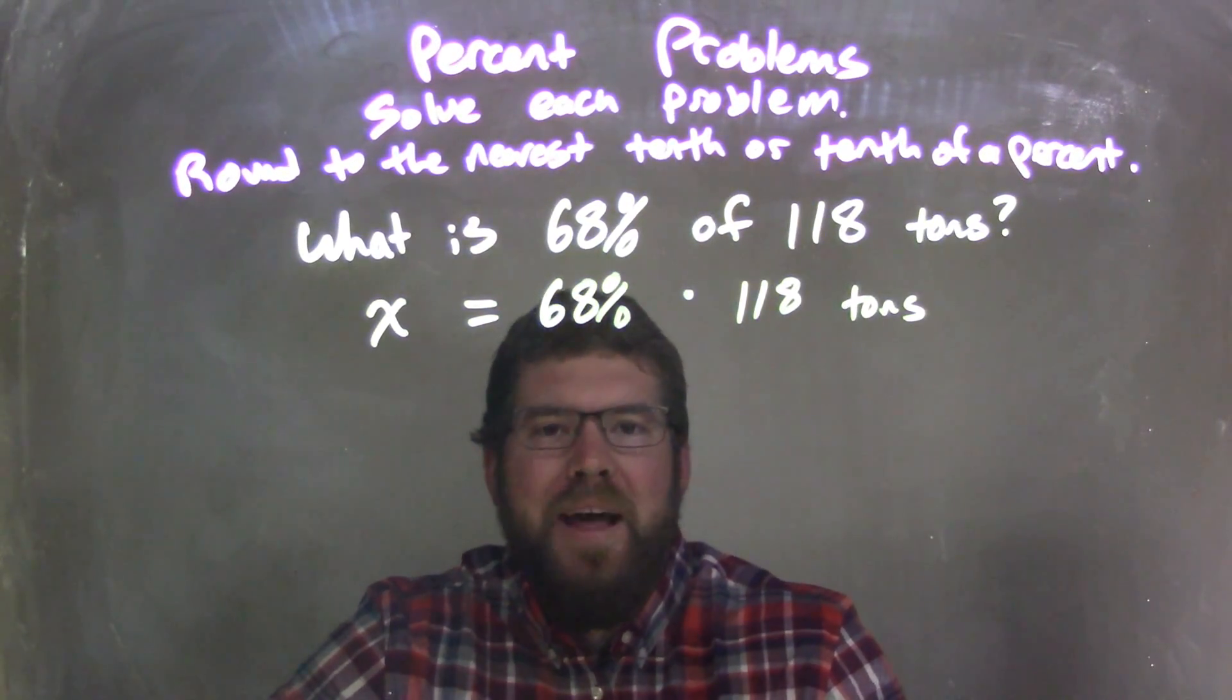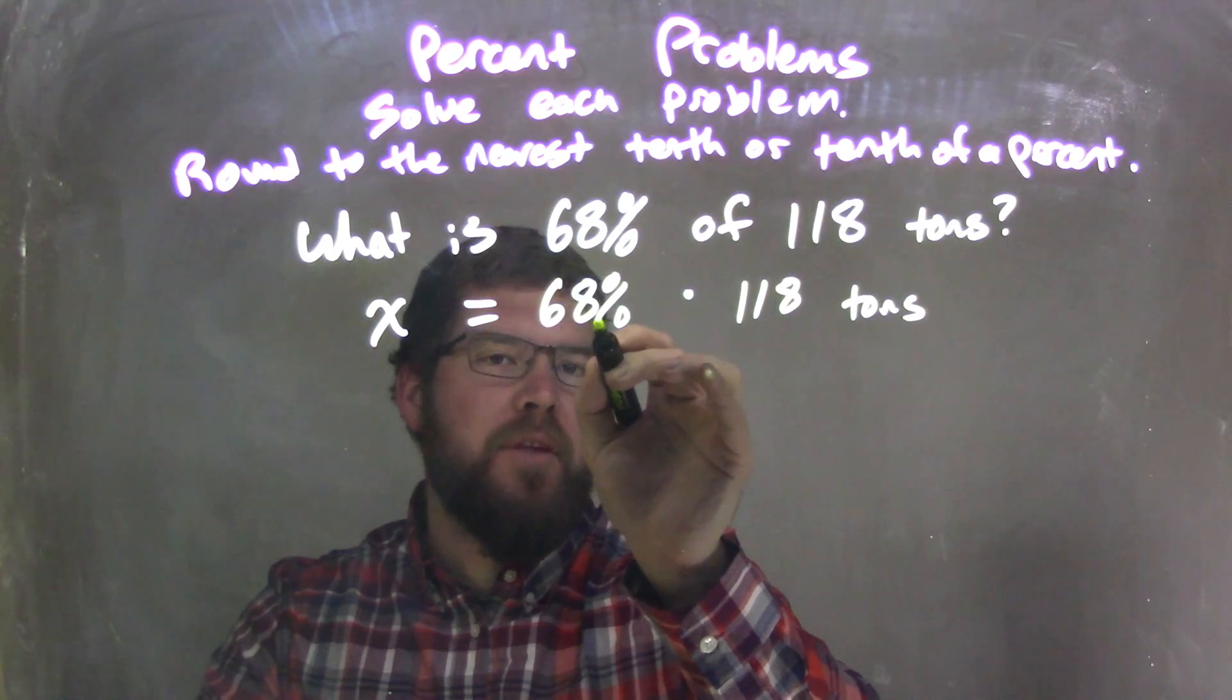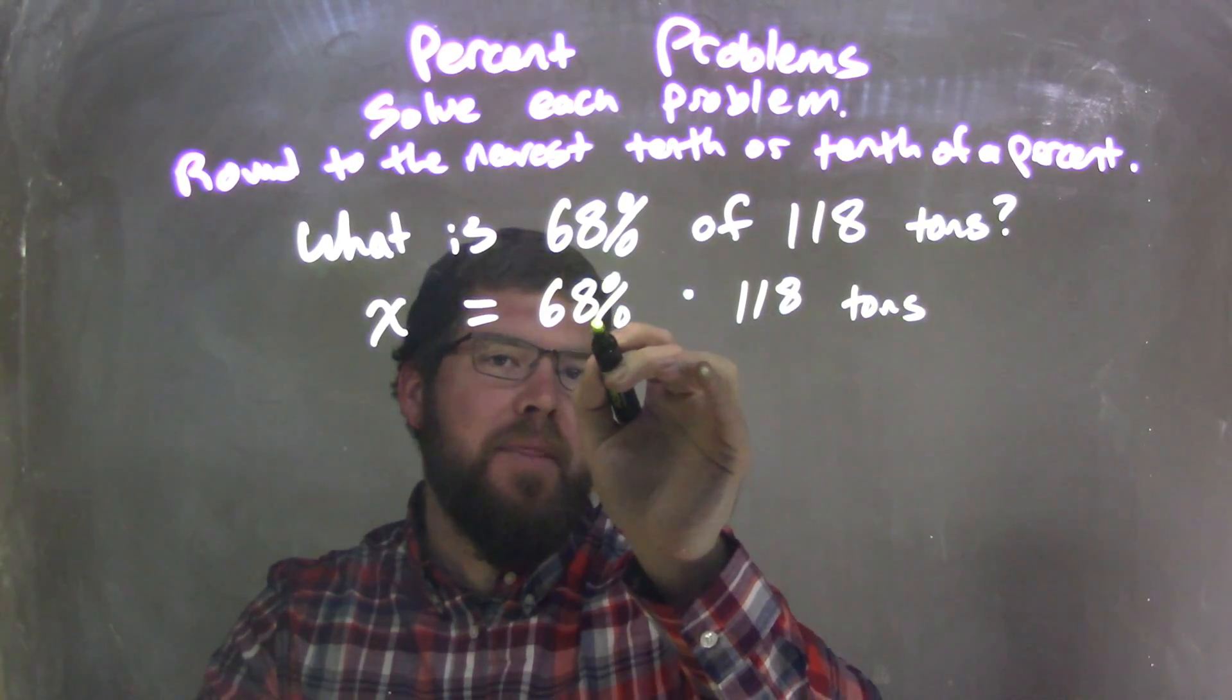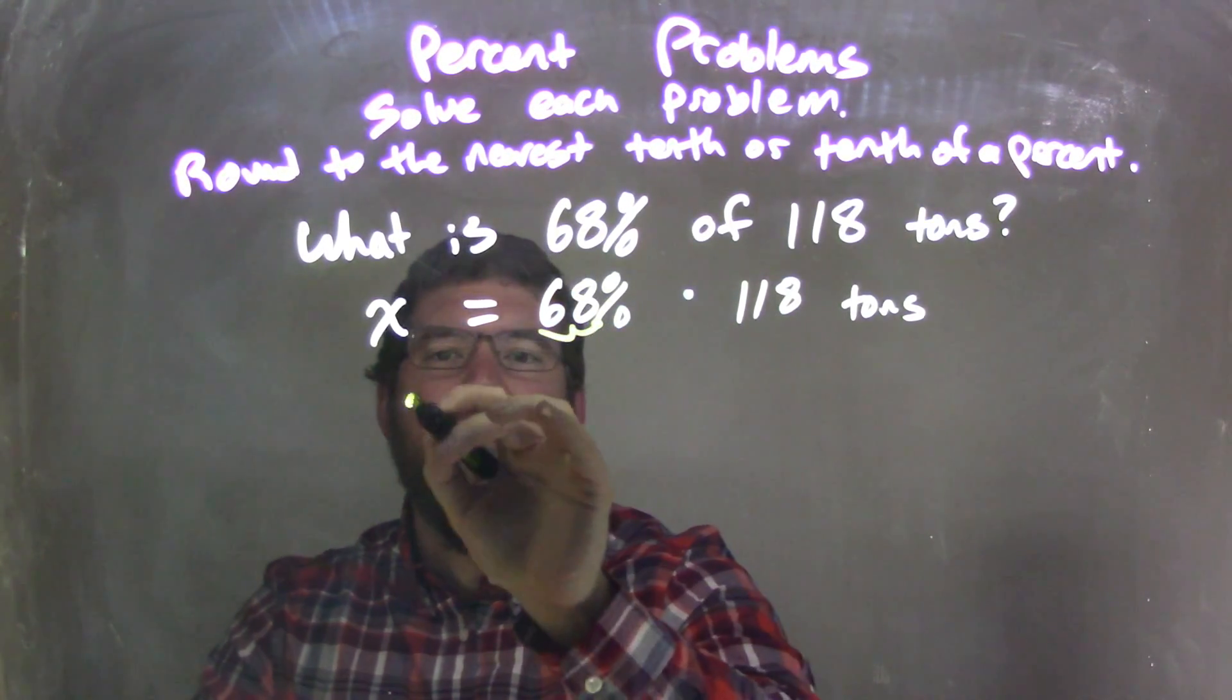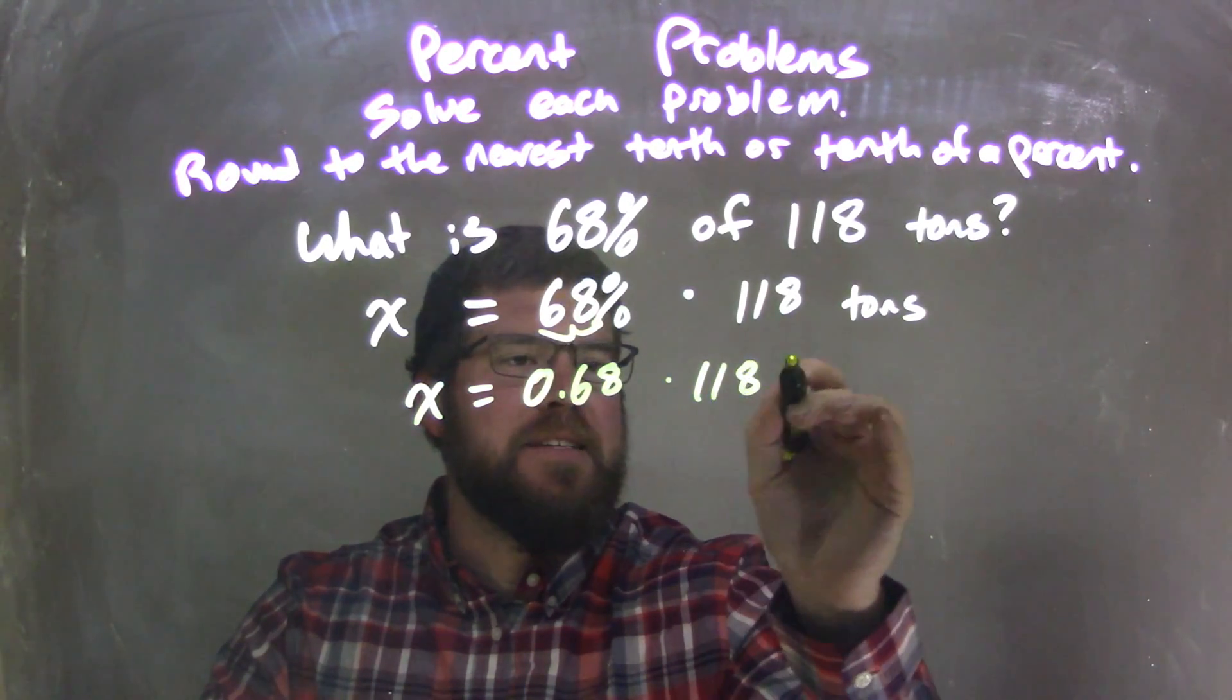Well, 68% I can convert that to a decimal by moving the decimal that's right here, that period right there, two units to the left, leaving me with X equals 0.68 times 118 tons.